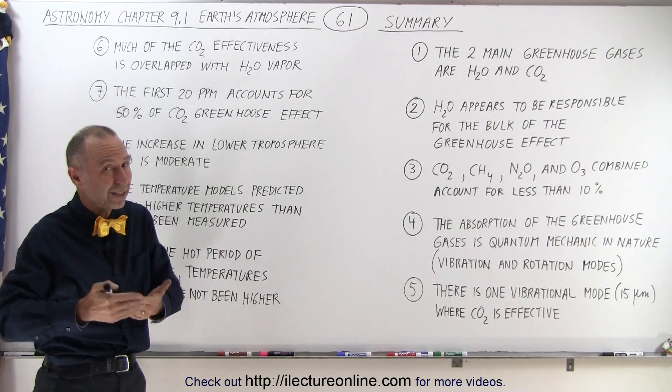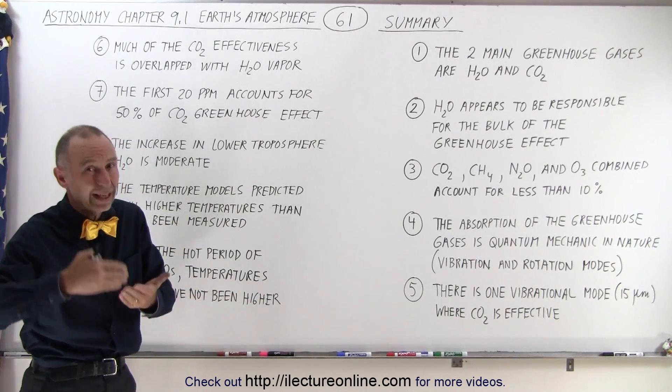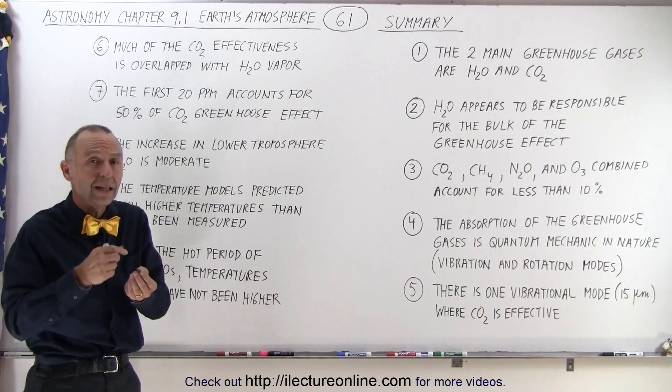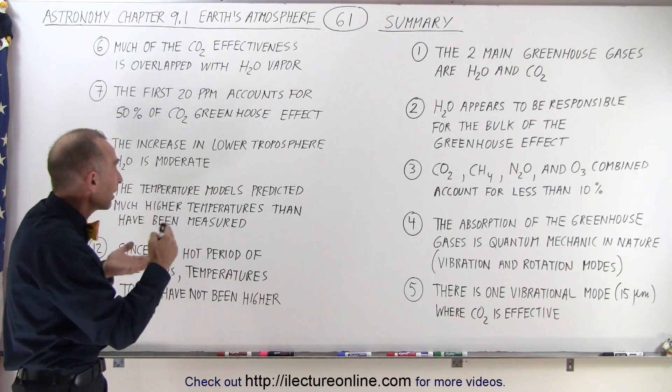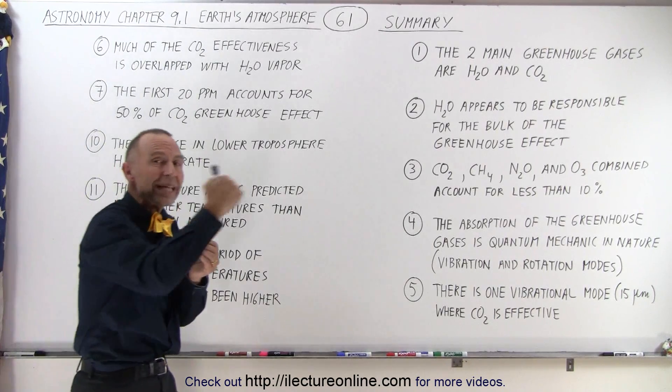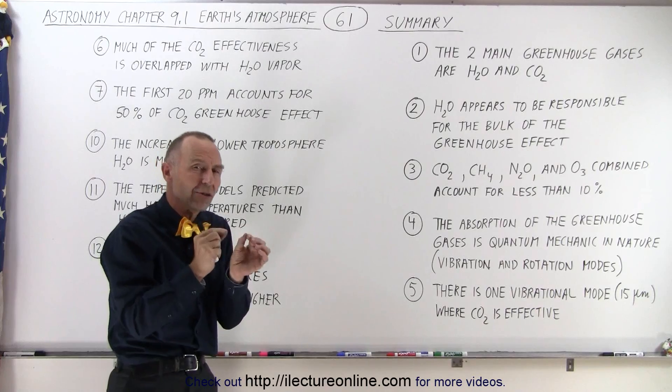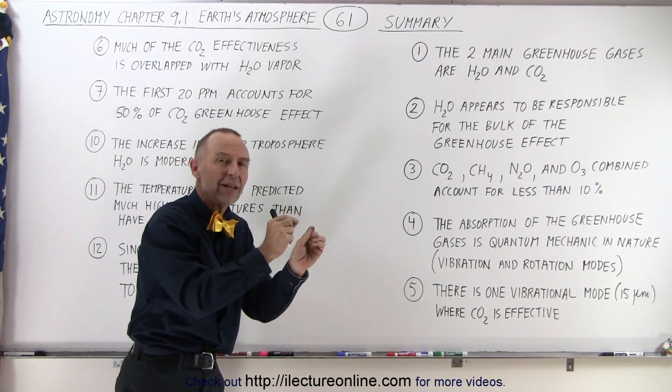By the time you're up to 40 parts per million, now you're at about 70 percent and so forth. What that means is that any additional increase in the carbon dioxide doesn't appear to have that much an effect on the temperature.